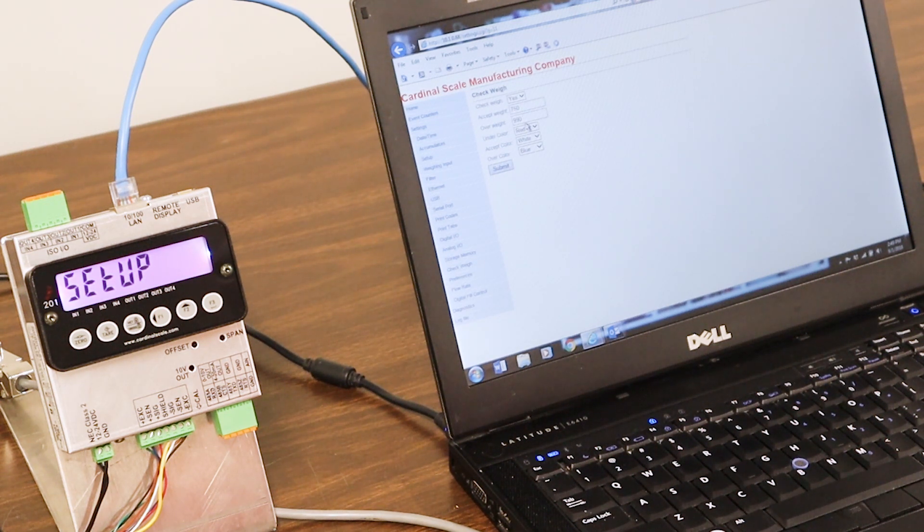I have my under color at red, my accept color at white, and my over color at blue. As you can see the seven different colors are red, green, yellow, blue, purple, white, and pink.